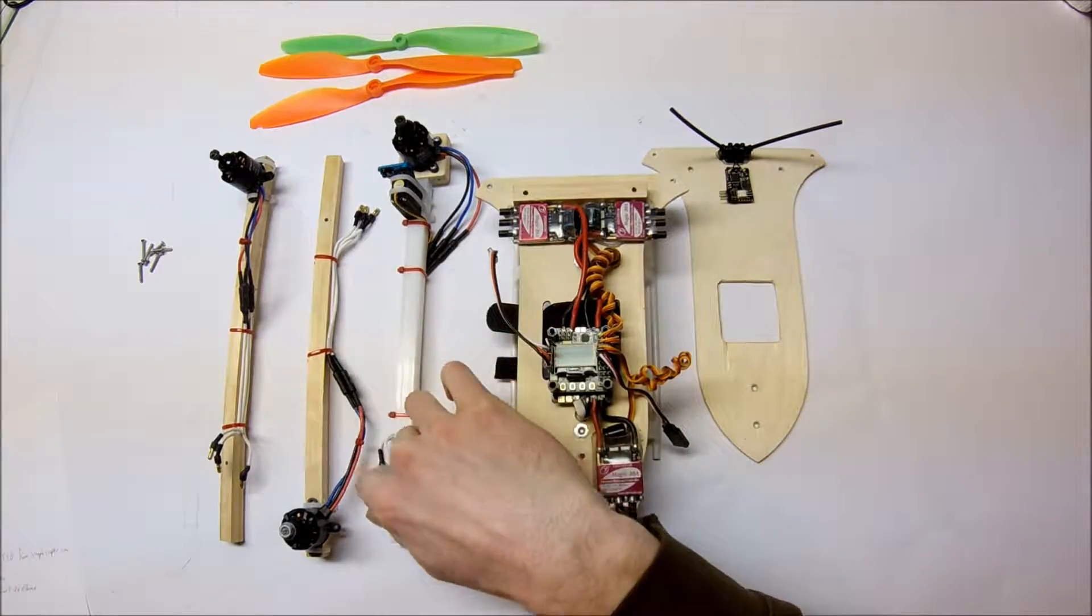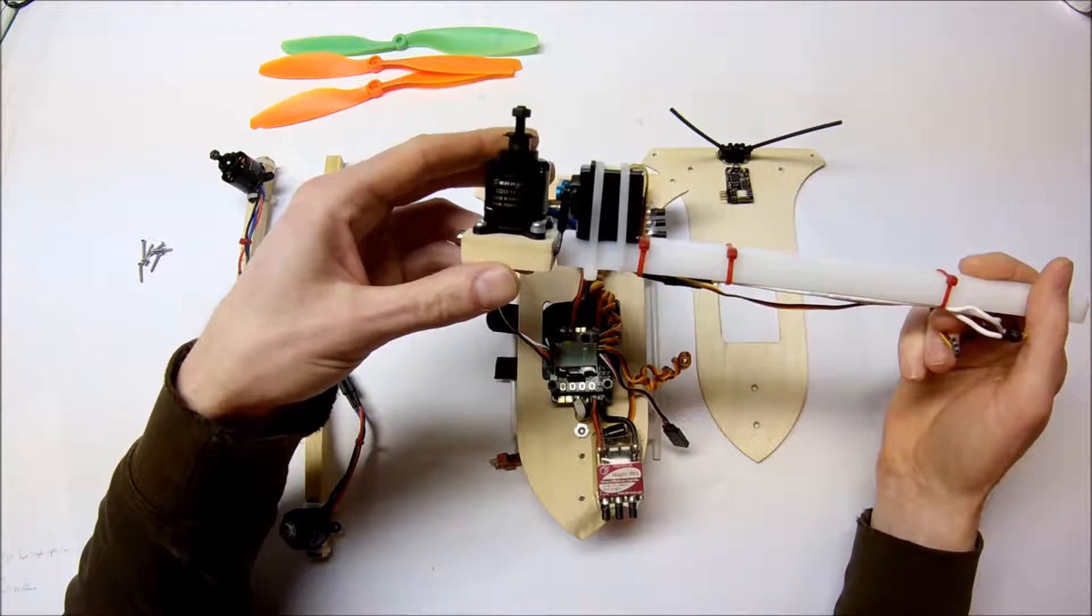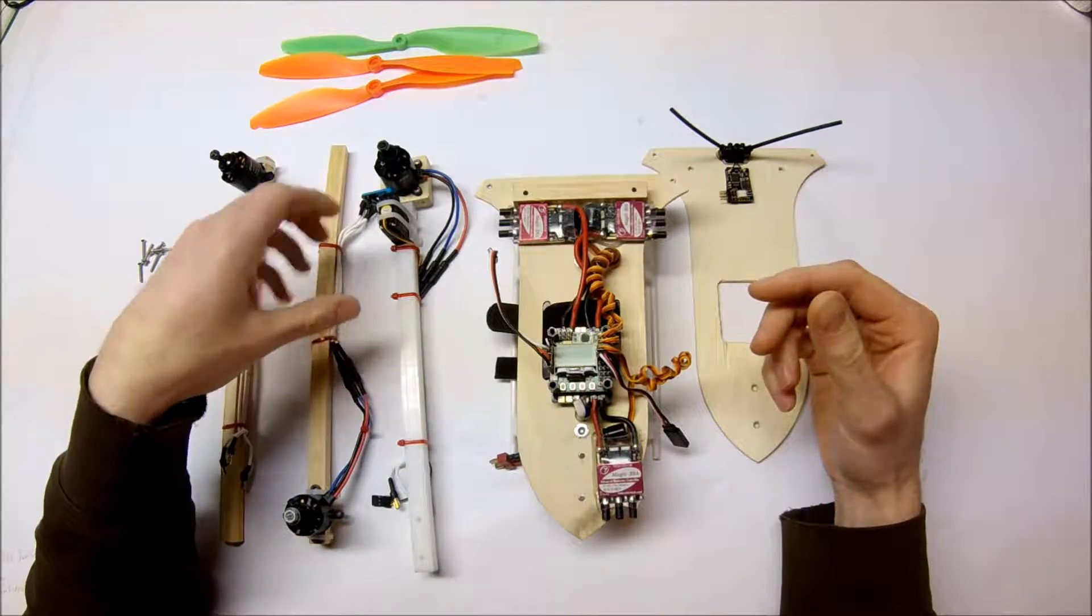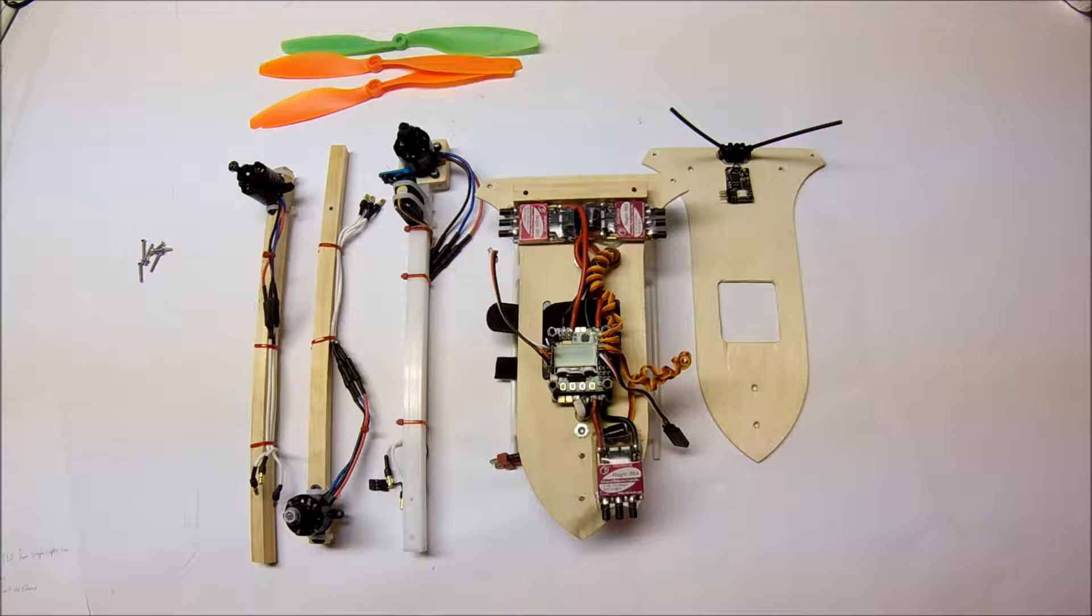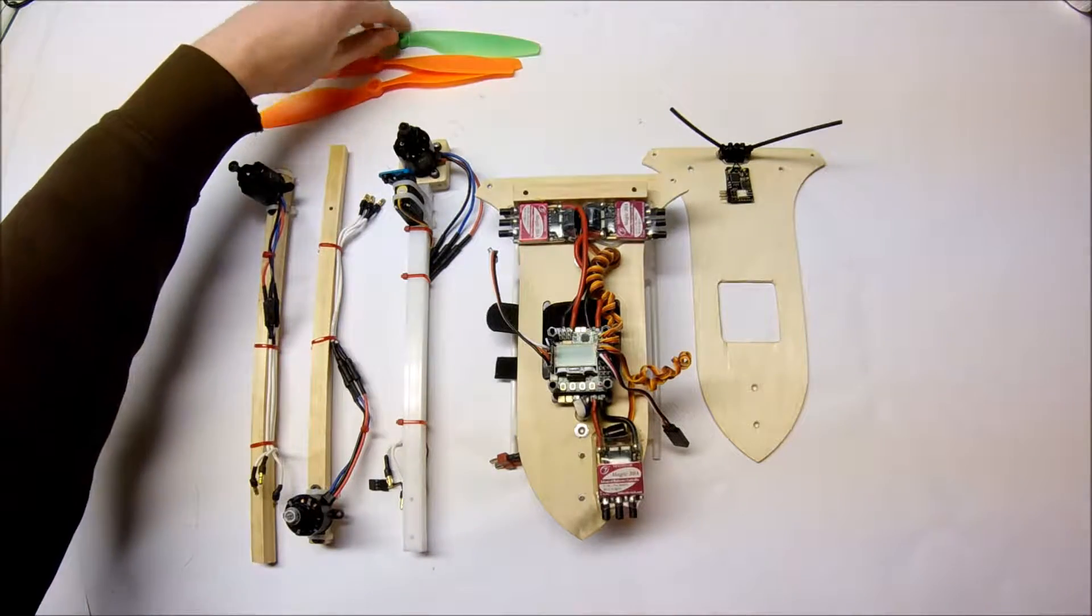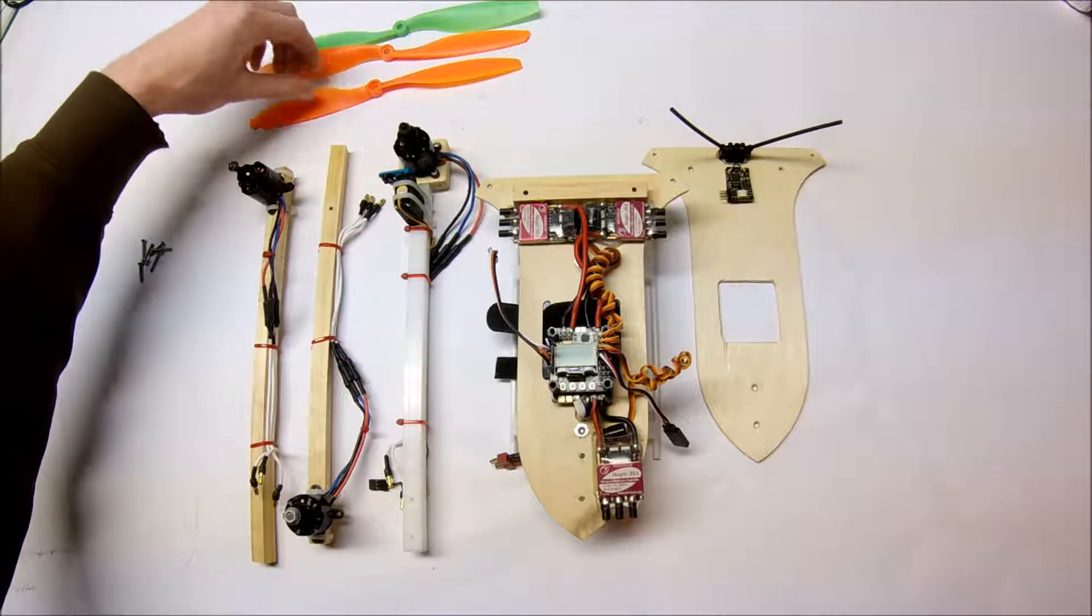I'm using Sunny Sky 9800 KV motors. The reason I went with the lower KV is to do more FPV flying. I wanted a little longer flight time, so I went with a lower KV motor and slightly larger props. Hopefully, that'll be a little bit more efficient, and I'll get better flight times.